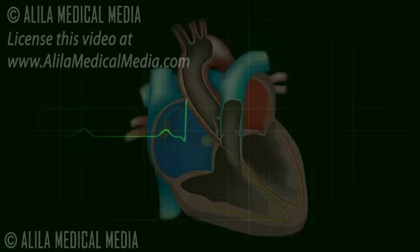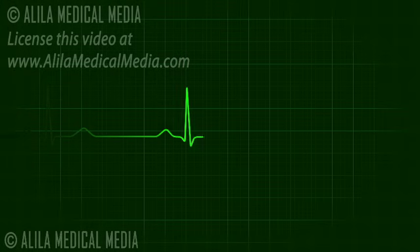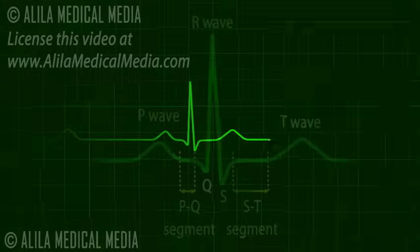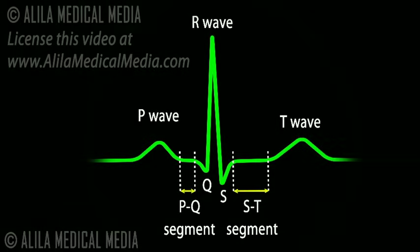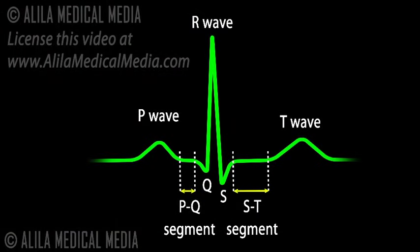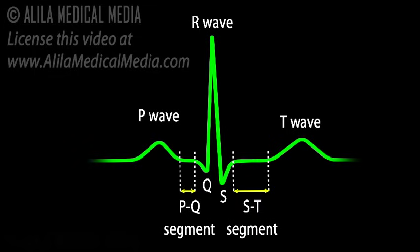Electrical activities of the heart can be recorded in the form of an electrocardiogram, ECG, or EKG. An ECG is a composite recording of all the action potentials produced by the nodes and the cells of the myocardium. Each wave or segment of the ECG corresponds to a certain event of the cardiac electrical cycle.